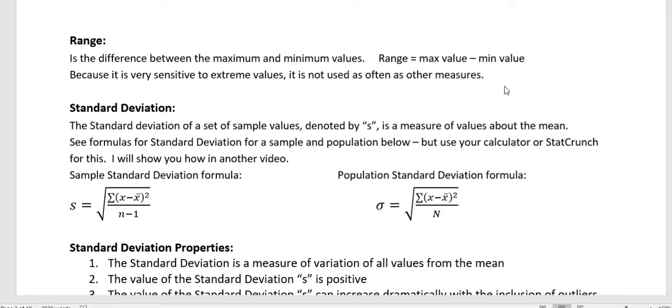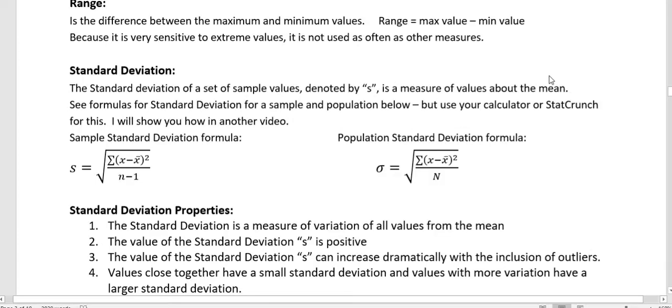And then the next one is standard deviation. We're going to spend some time talking about standard deviation because it's an important concept. The standard deviation of a set of sample values is denoted by S. If we're looking at a population, it's denoted by lowercase sigma. And it talks about the measure of the values about the mean. So we start with the mean and we say, what's the spread of the data from the mean out? And we start talking about standard deviation.